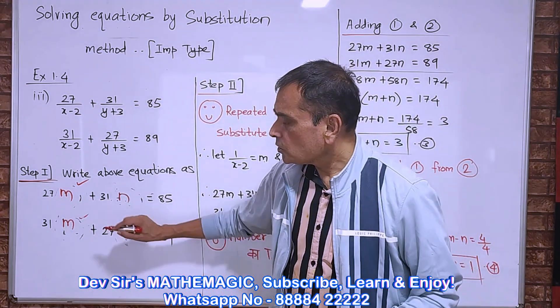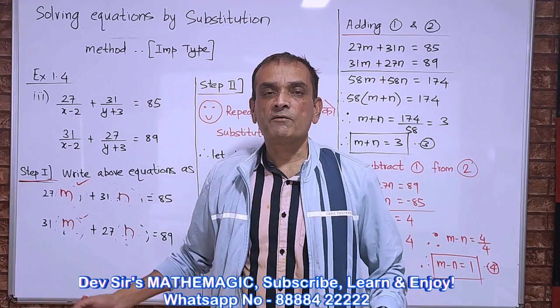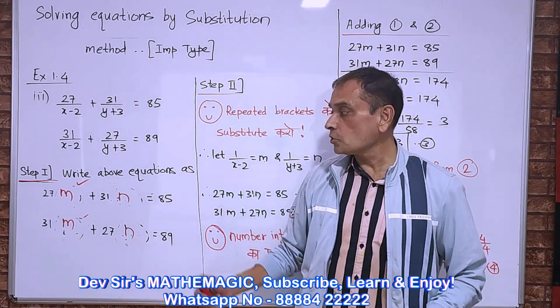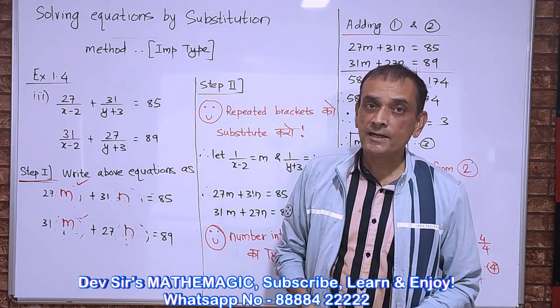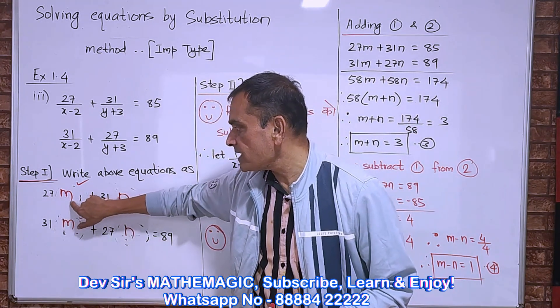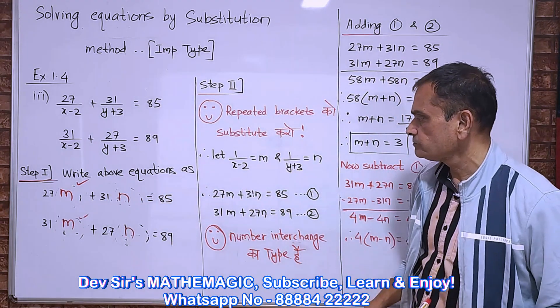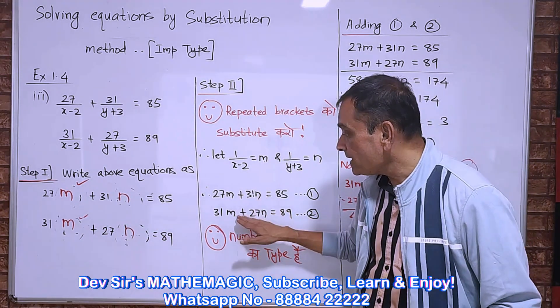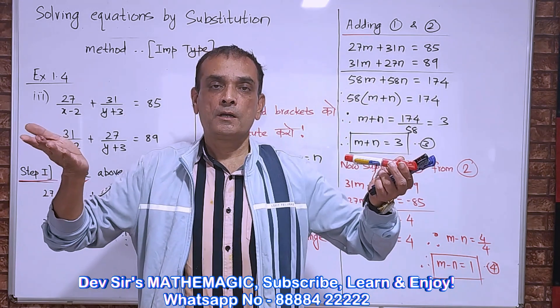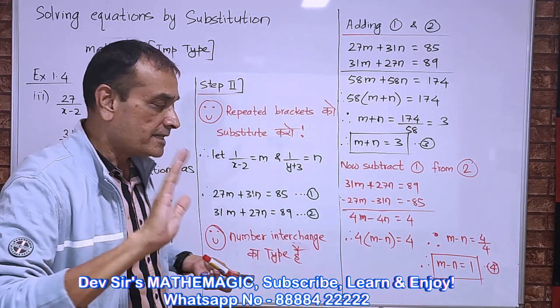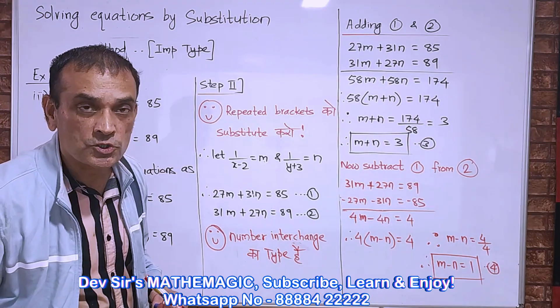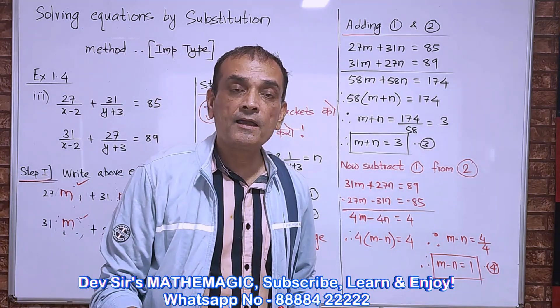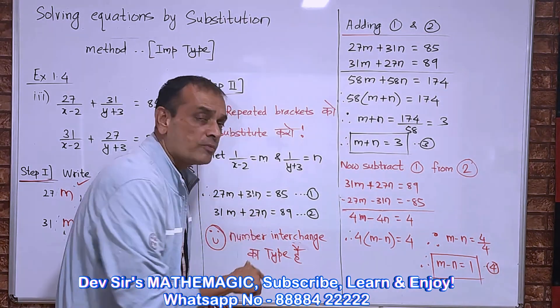Now the mistake that can happen - don't write 27 upon m, otherwise there will be no use of what we are doing. Because we don't want variables in the denominator. We want to bring the variable up. Now after making the substitution, we have got 27m plus 31n equal to 85, and 31m plus 27n equal to 89.